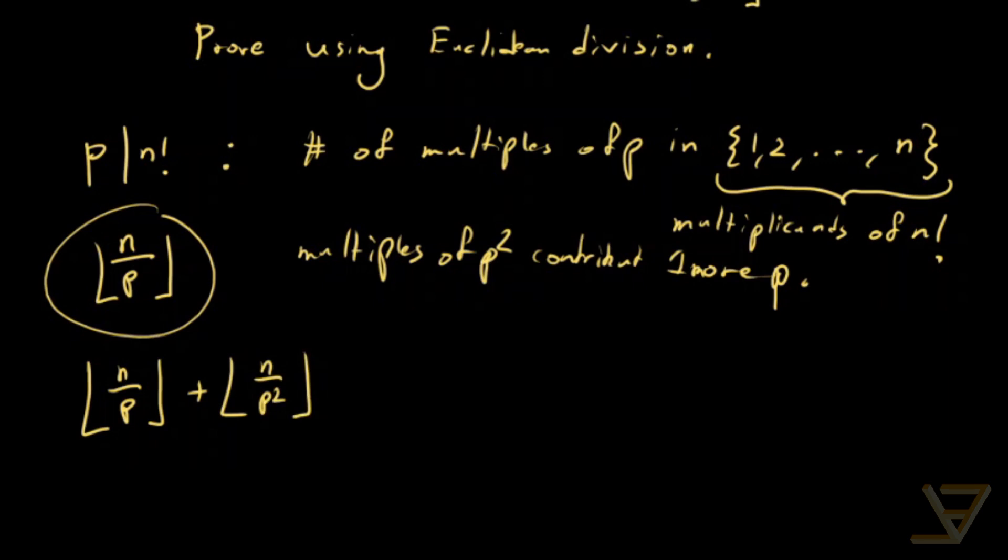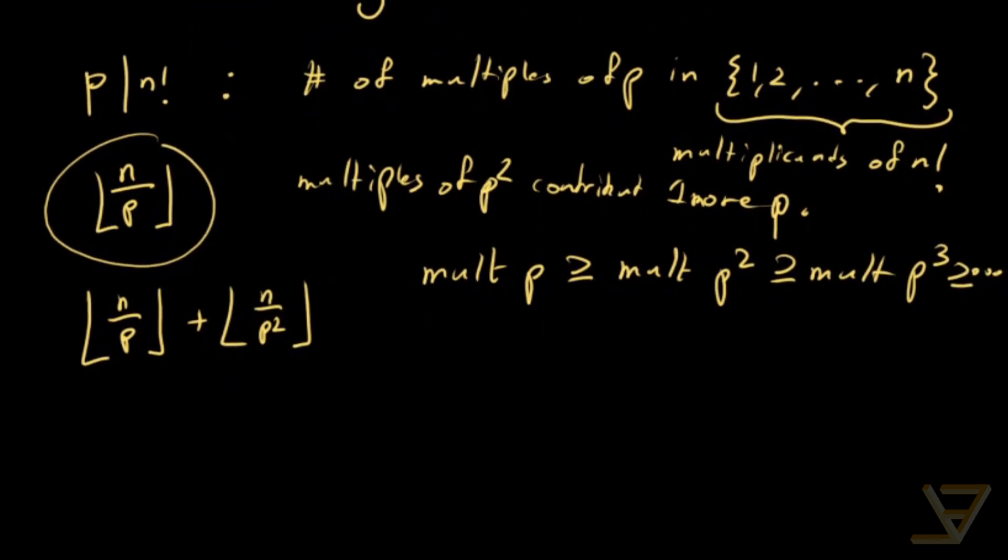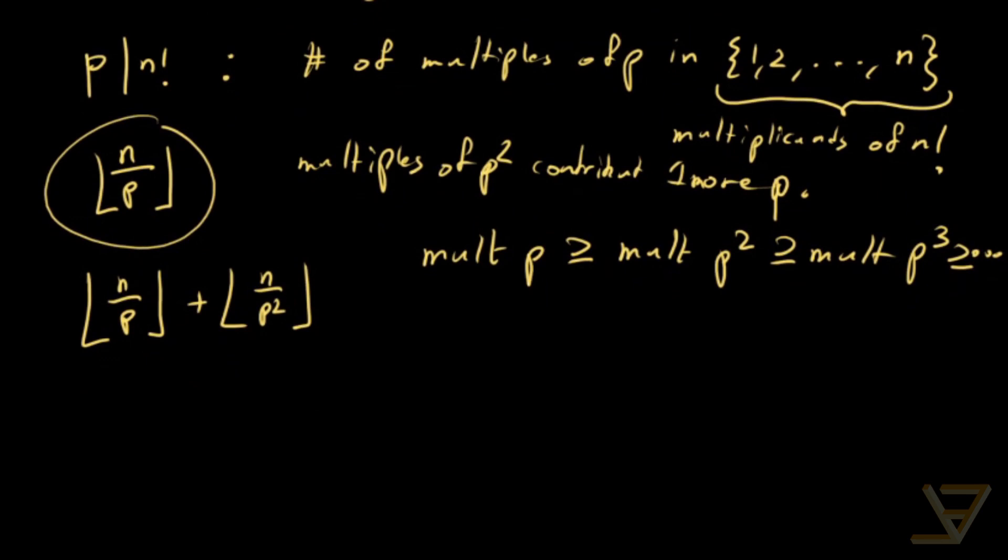And we can continue in this manner because what's true is that the multiples of p contain the multiples of p squared, which contain the multiples of p cubed, and so on. So we're just going to be tacking on an extra count each time. So n over p cubed floor function, and so on.